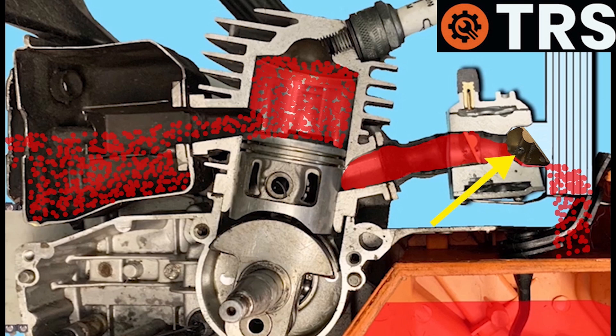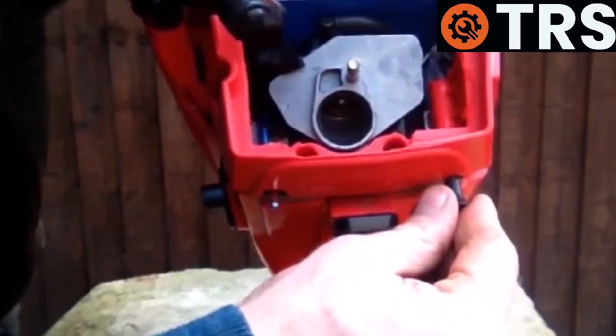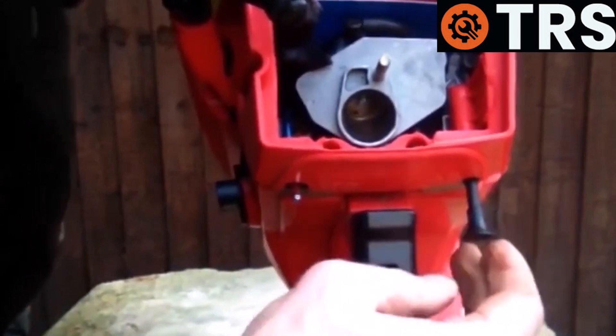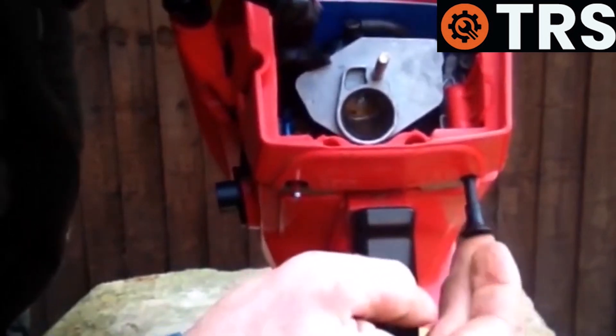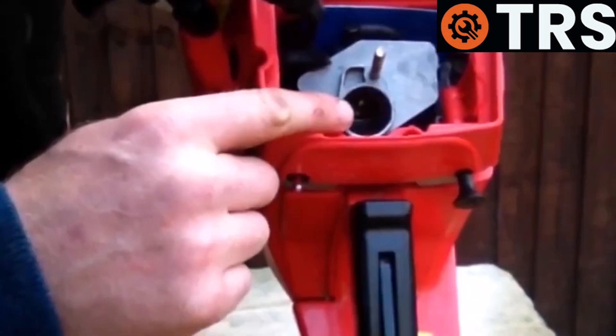But this choke plate being on for too long isn't always down to operator error. I have known it where the linkage between the choke lever and the choke itself is somehow disconnected and the choke is left on but the operator has of course shifted the lever into the correct position and so they think that the choke is now off when it's still on.